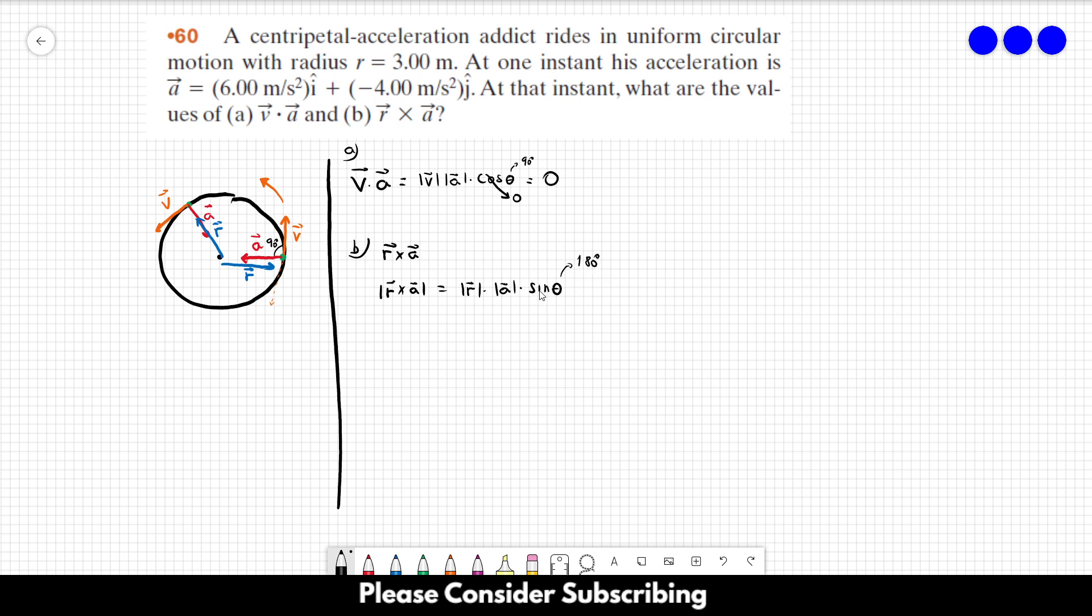And the sine of 180 degrees is 0 as well. So the cross product between R and A is equal to 0. That's the answer of letter B.